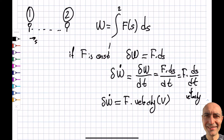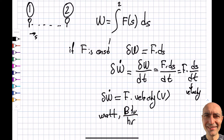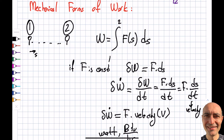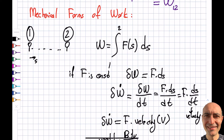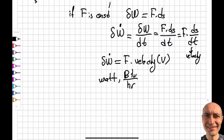Force times velocity is the power — I'm assuming you knew this. You can look at the units as well. This is watts in SI, or BTU per hour in British gravitational units. First is SI, second is British — that's what I have here.